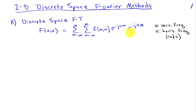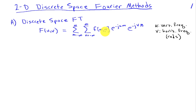The sum over m — remember m is the row index of the image, so this is going down a column as we sum over m — u is the frequency associated with going down a column. So u ends up being the vertical frequency. And v, in contrast, is involved in the sum over n, which is summing across columns within a row. So v is the horizontal frequency.